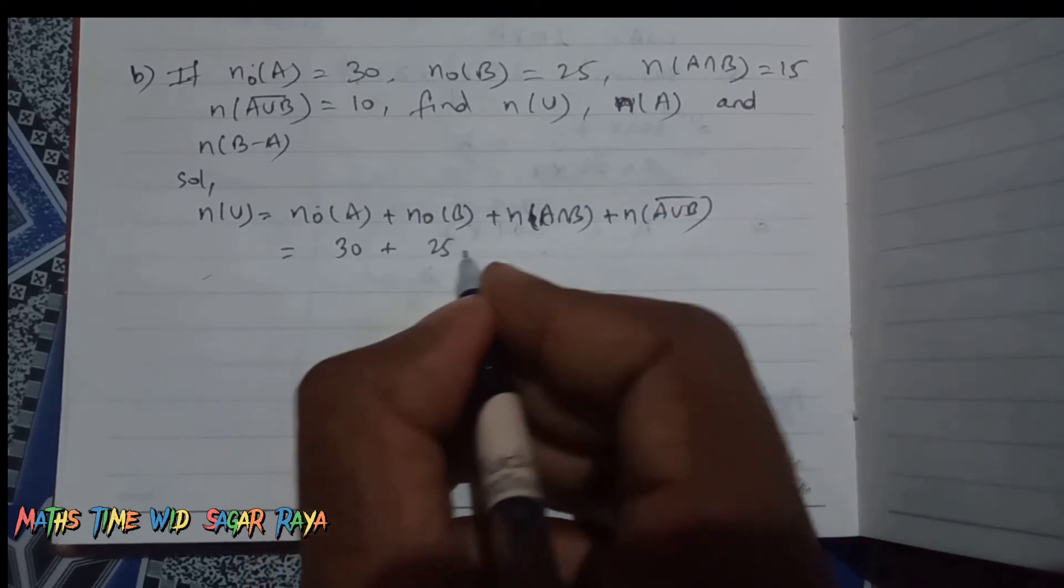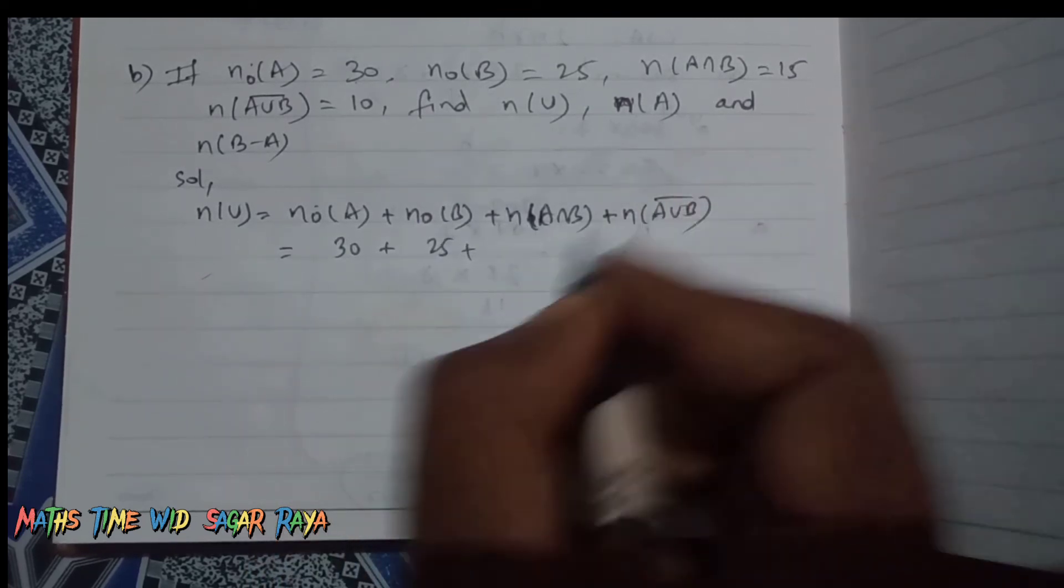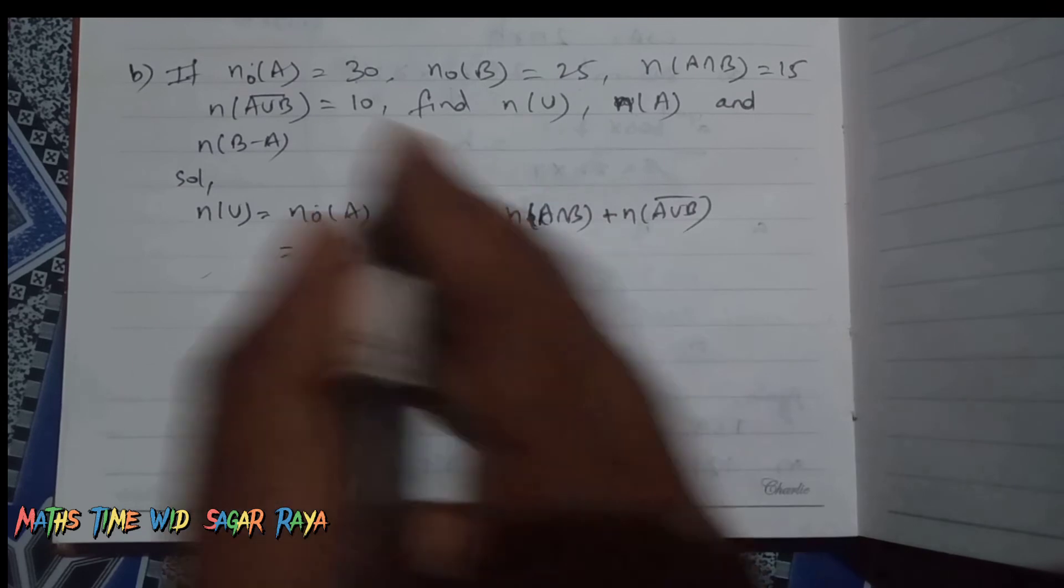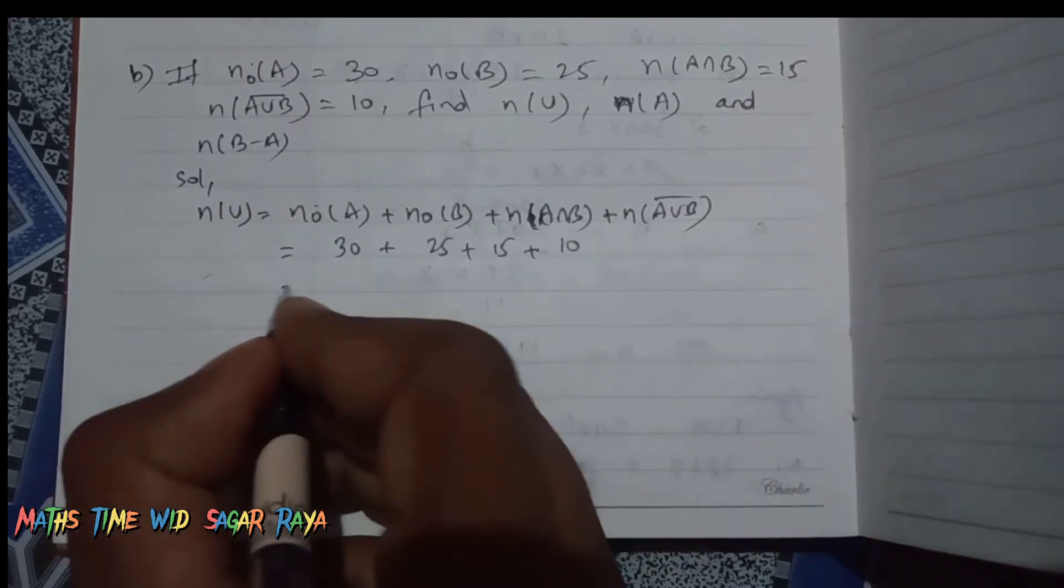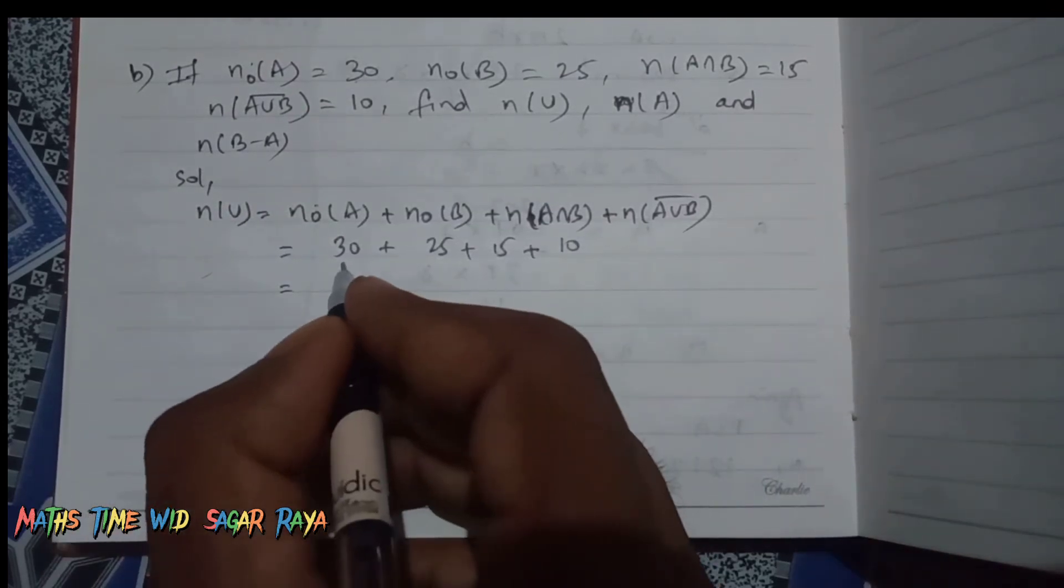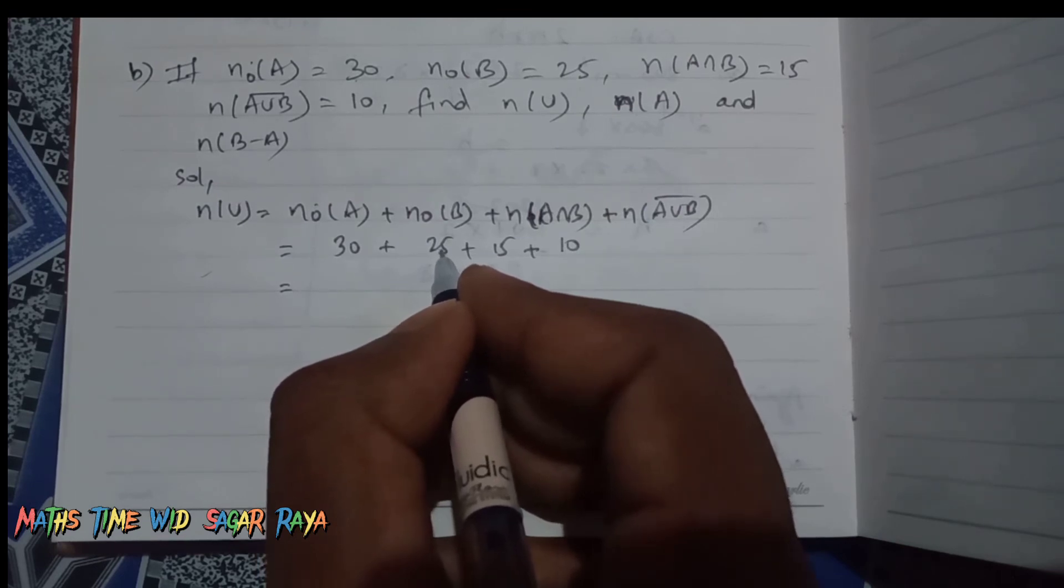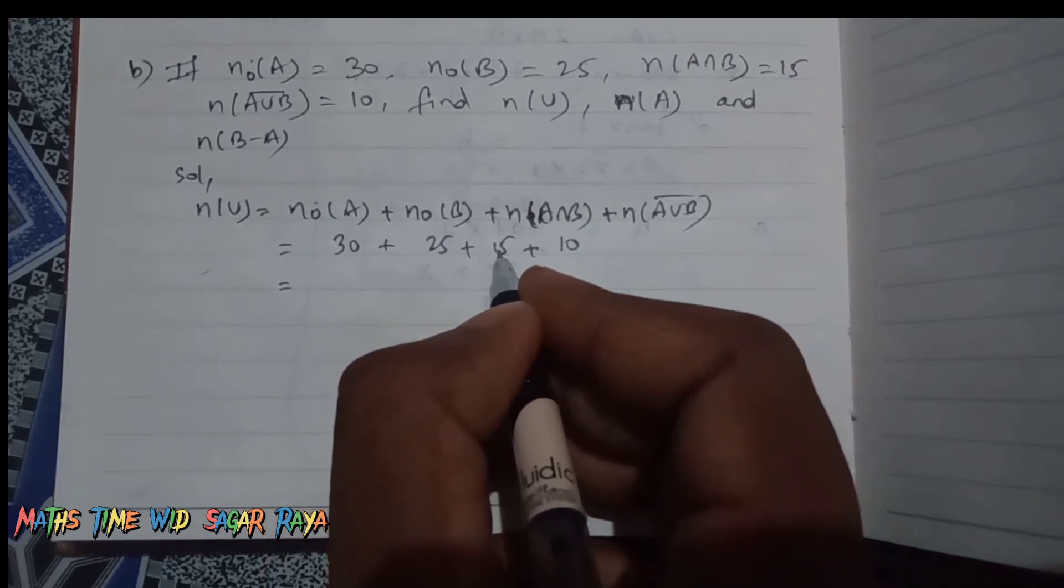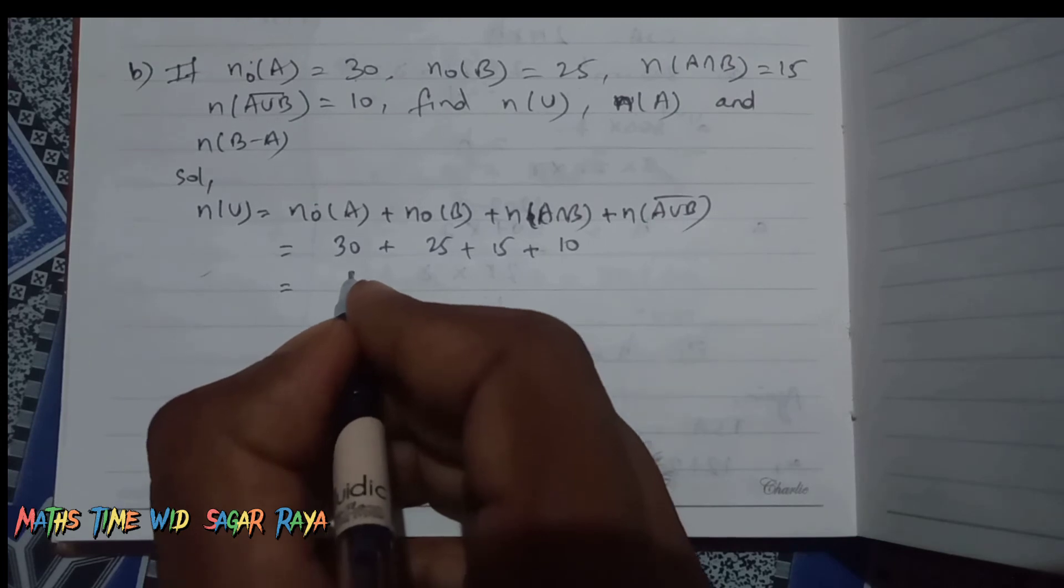(only B) is 25, n(A∩B) is 15, and n(A∪B)' is 10. So 30 and 25 is 55, plus 15 is 70, plus 10 equals 80.